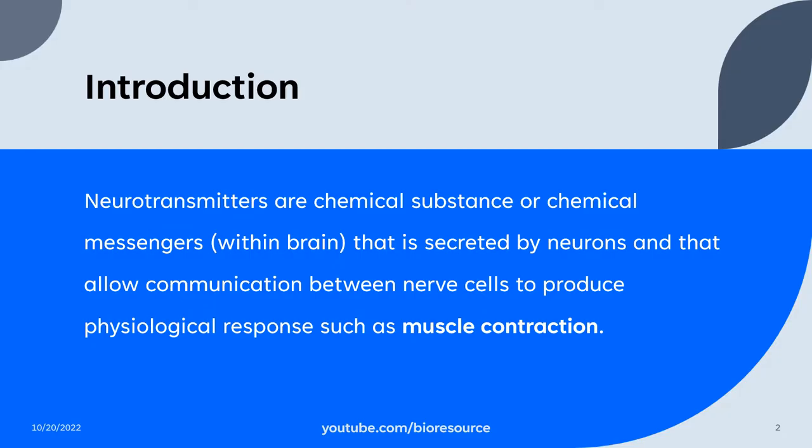So what are neurotransmitters? Neurotransmitters are chemical substances or chemical messengers that are secreted by neurons and that allow the communication between nerve cells, producing physiological responses such as muscle contraction. These are produced by nerve cells in the brain and help to give a physiological response.